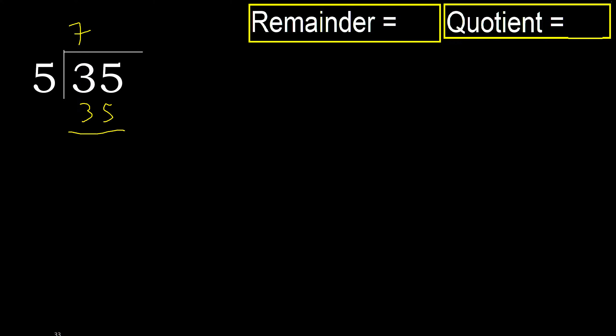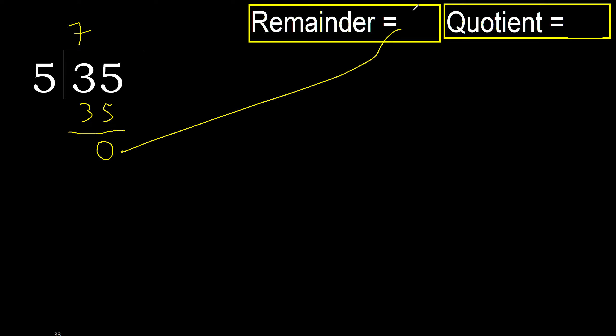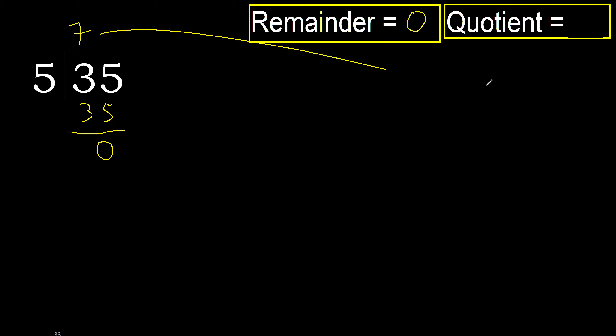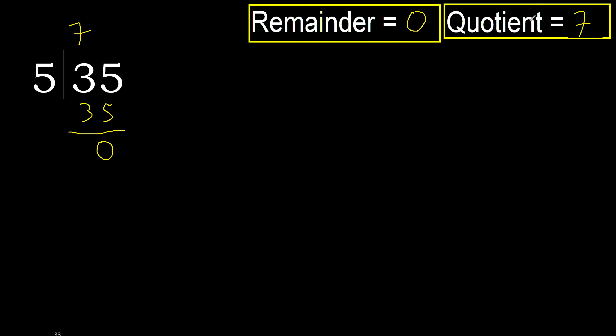35 minus 35 is 0. Next digit — there is none, therefore finish. Remainder: 0. Quotient: 7.